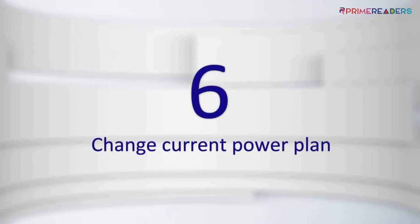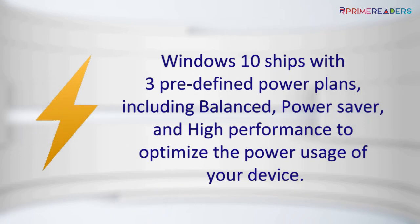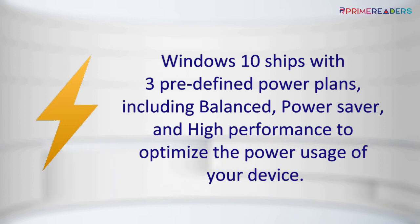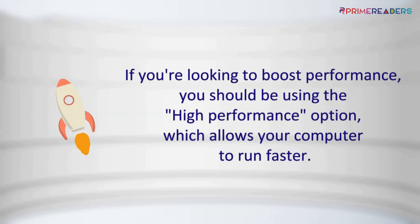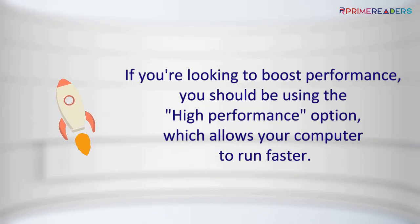Change Current Power Plan. Windows 10 ships with three predefined power plans, including Balanced, Power Saver, and High Performance, to optimize the power usage of your device. If you're looking to boost performance, you should be using the High Performance option, which allows your computer to run faster.